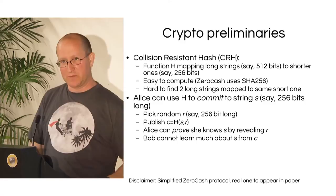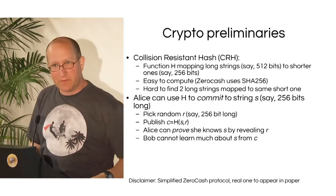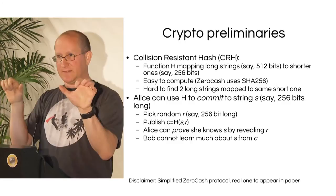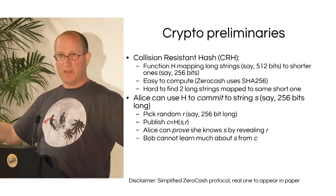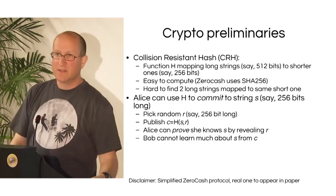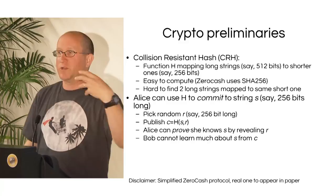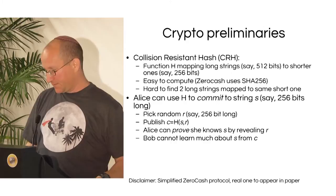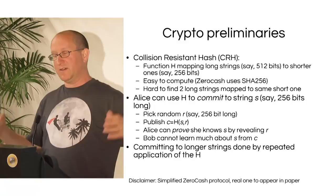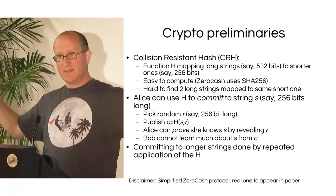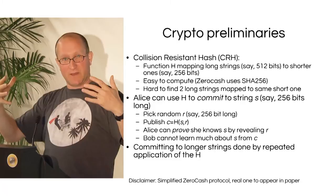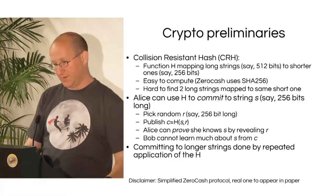Alice can use a hash function to commit to a secret string S: she picks random R, concatenates S and R into a 512-bit string, applies the hash, and publishes the result. Someone seeing the hash cannot reconstruct S and R. But Alice can later prove she knows S by revealing R, allowing everyone to reapply the hash. You can also apply this recursively — hash a 1024-bit string down to 512 bits and then 256 bits — committing to a much larger string with a very short value.